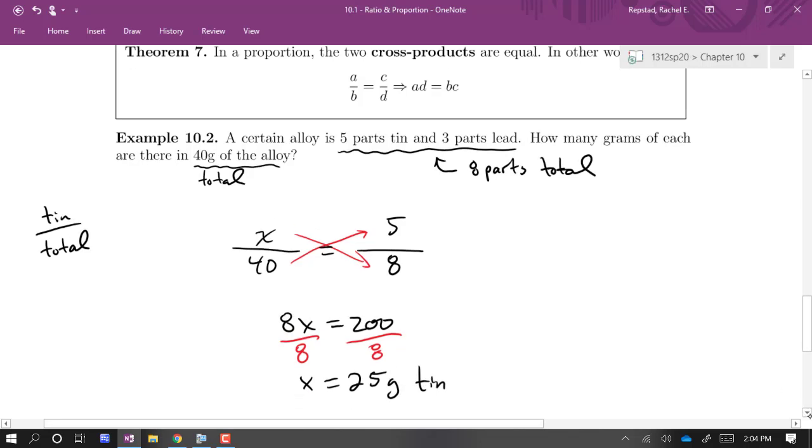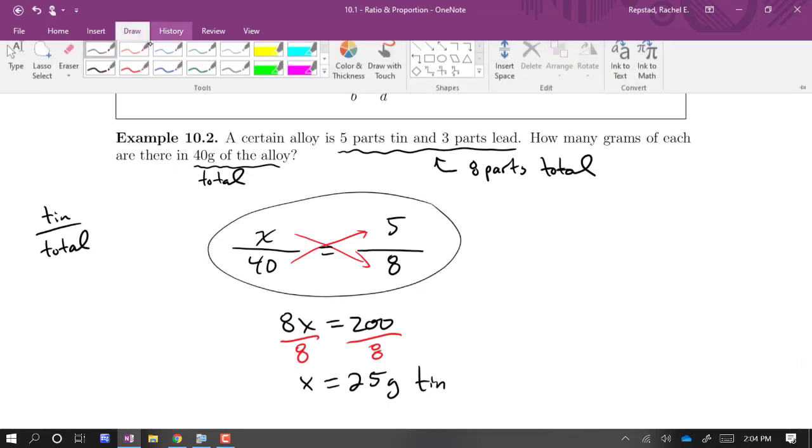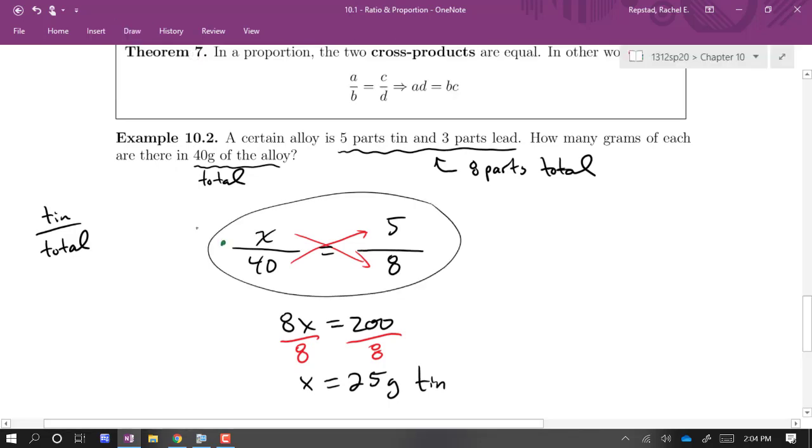Of course you didn't have to use the cross products. If I were looking at this equation, I think it's probably simpler to just say, oh, let's multiply both sides by 40. And that already gets X by itself and eight goes into 40 five times and five times five is 25. So either way we get that same result of 25 grams of tin.